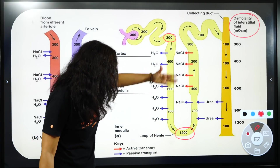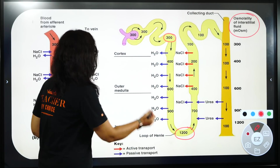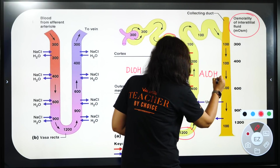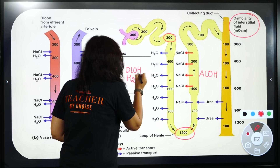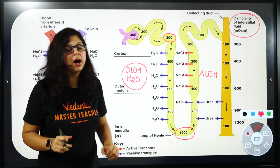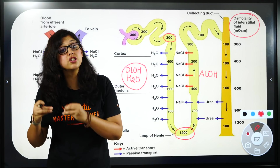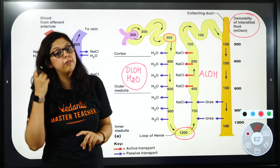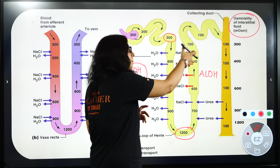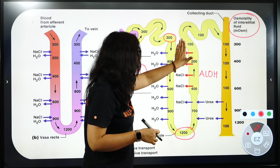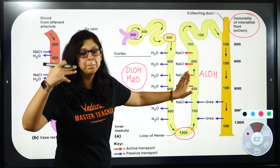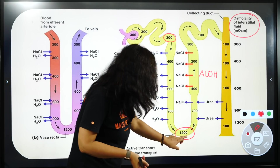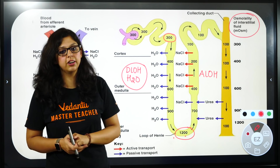यह आपकी descending limb of Henle है, और यह ascending limb of Henle है. Descending limb of Henle से सिर्फ पानी बाहर आएगा. Ascending limb of Henle से आप salt को बाहर pull कर रहे हैं in the form of sodium chloride. जब आप salt को बाहर pull करेंगे medullary interstitium में, तो इस medullary interstitium की osmolarity बढ़ जाएगी, जिसकी वजह से descending limb of Henle से पानी बाहर आ जाएगा, और value 300 से पहुँचकर 1200 तक हो जाएगी.